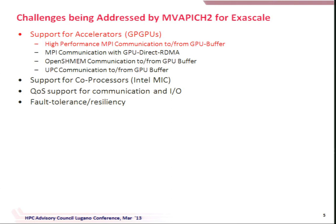Let's start with GPGPUs. Yesterday we heard talks from NVIDIA. There are a lot of challenges with these GPUs — people have been using them in offload mode. But if you really want to move data from a GPU buffer to another GPU buffer, there are many challenges. We'll start by discussing how you can achieve high-performance MPI communications to and from GPU buffers. There is also a new GPU Direct RDMA coming up, and we have a very fresh implementation of MVAPICH2 on GPU Direct RDMA — I'll show you some numbers that nobody has looked at except some NVIDIA people.